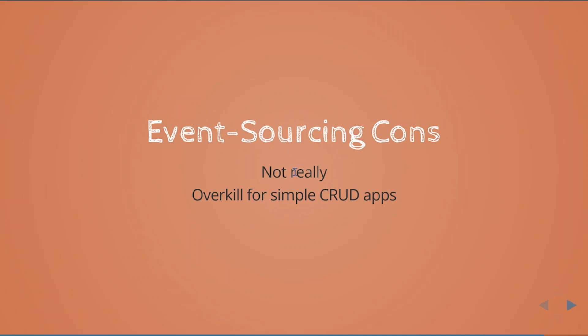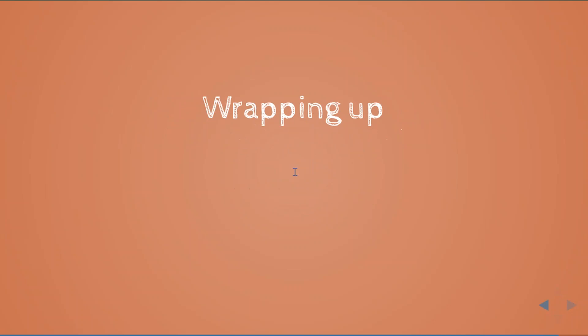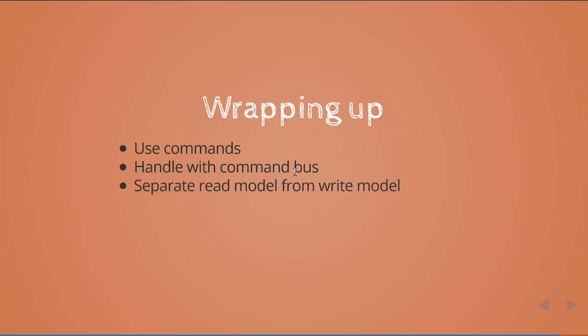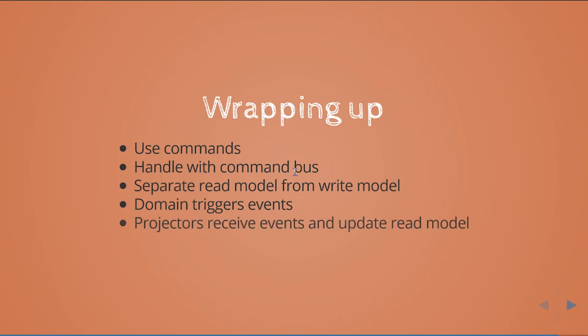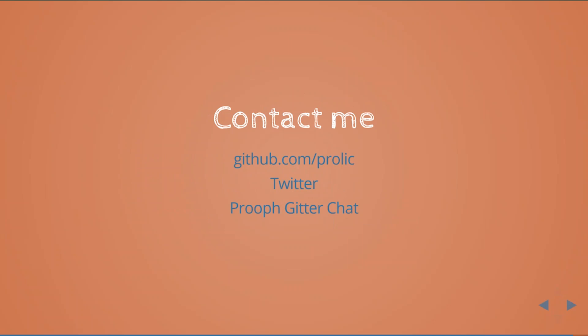Especially when you want to learn new things. So let's wrap it up: use commands, handle them with a command bus, separate read model from write model, trigger domain events, and have projectors receive events and update the read model. That's how you do event sourcing. You can contact me at github.com/Podic, I'm also on Twitter and in the proof GitHub chat where you can ask any questions about proof event sourcing or the service bus. Thank you.